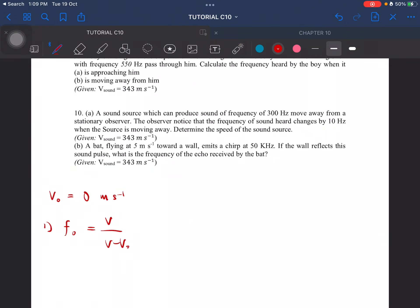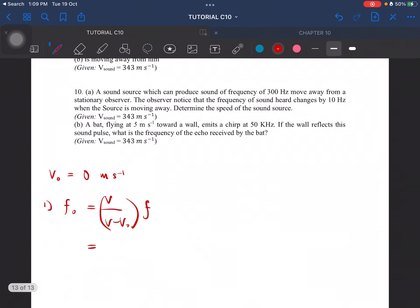v over v minus v_s times f, then you will get 622.6 Hertz. When it is moving away from him, the formula changes to plus. The frequency heard by the observer is 492.6 Hertz.